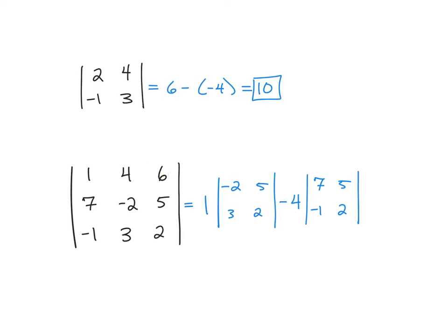Move from the 4 to the 6, that one we add. So you're always subtracting this one, adding this one. And if you take out the row and column 6 is in, you're left with the second order determinant 7, negative 2, negative 1, 3.